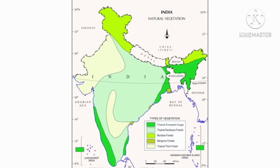Next one, mangrove forest. Mangrove forest can be seen in the Sundarbans delta in West Bengal, and also in Odisha — the south east part of India. So we have studied about the location of the vegetation types of India.